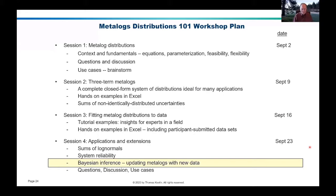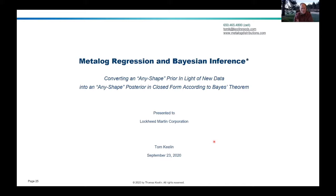I'm going to move now to Bayesian updating. This is a particularly important subject, and the material I'm going to show you is completely new — it has not been published yet. The title is Metalog Regression and Bayesian Inference. I'm in the process of finishing a paper co-authored with my thesis advisor Ron Howard. We're going to submit it for publication and go through the full peer review process. The general topic is converting an any-shape prior in light of new data into an any-shape posterior in closed form according to Bayes' theorem. This has never been possible in the way I'm going to show it, and now it is.